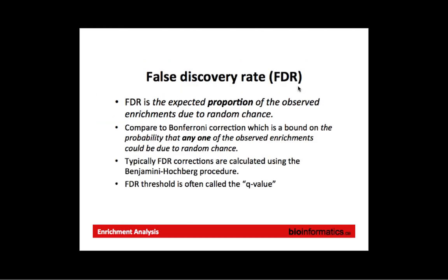So often people accept a less stringent condition: the false discovery rate, which leads to a gentler correction. False discovery rate is probably one of the most commonly used multiple testing corrections because it's a little bit gentler. The definition is that it's the expected proportion of observed enrichments that are due to random chance. If you've done enrichment analysis with a thousand pathways and you're satisfied with a false discovery rate of 5%, that means 5% of your results might be due to random chance. But that may be okay as a trade-off for getting more signal.